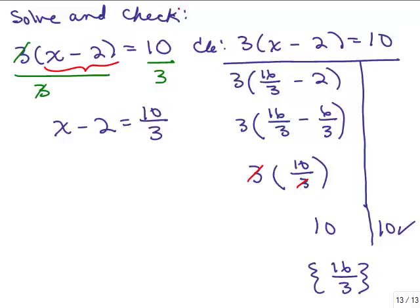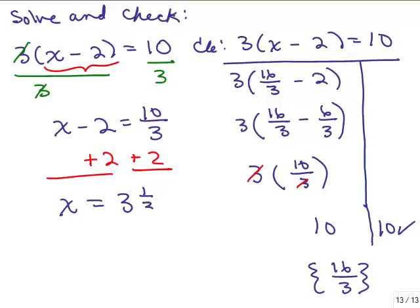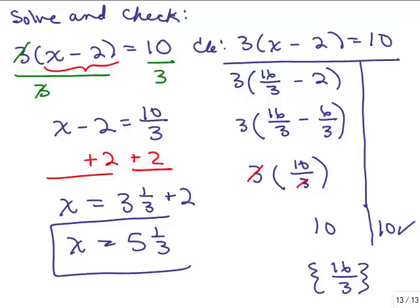Now I need to add 2 to both sides. I need to make 10 thirds plus 2 have a common denominator, or I could change 10 thirds to a mixed number. 10 thirds is the same as 3 and 1 third, plus 2, so my answer is 5 and 1 third. And 5 and 1 third is the same thing as 16 thirds. You could also write 2 as 6 thirds, and 10 thirds plus 6 thirds gives you 16 thirds — just an alternate way of solving the same problem.